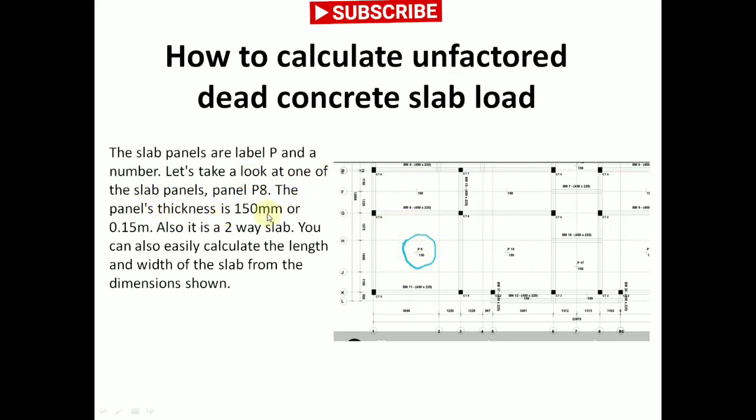The panel's thickness is 150 millimeters, as stated here, or it can be converted to 0.15 meters. Also, it is a two-way slab. Take a look at this symbol that looks like a cross, a two-way slab. You can also easily calculate the length and width of the slab from the dimensions shown.